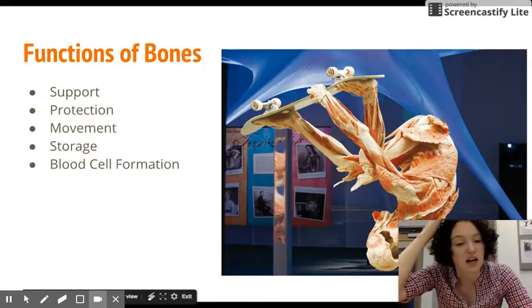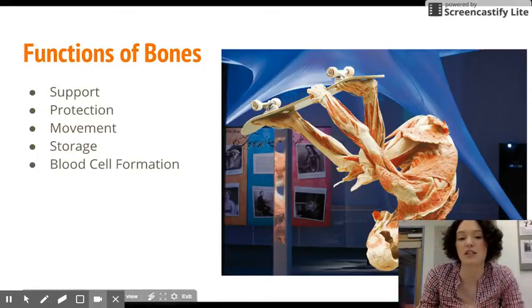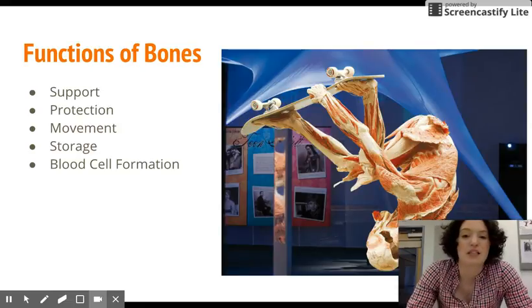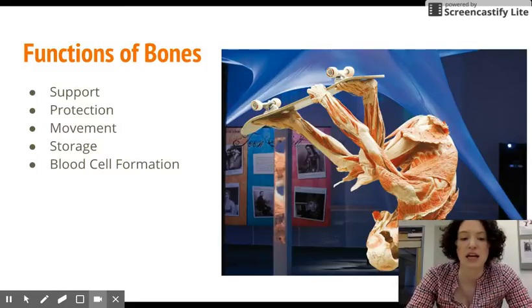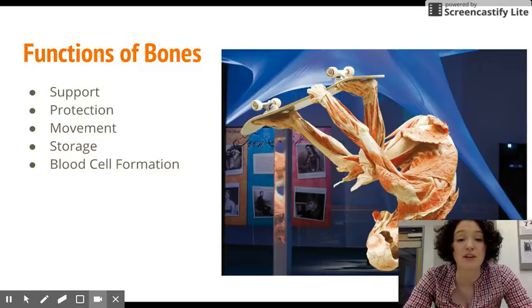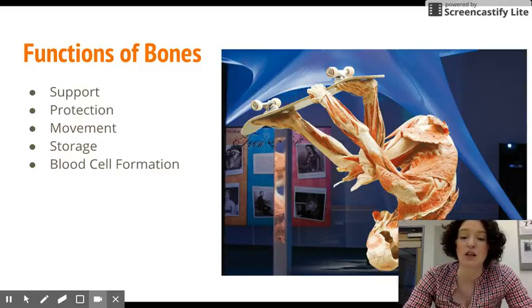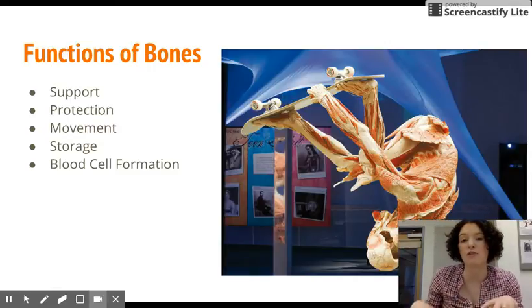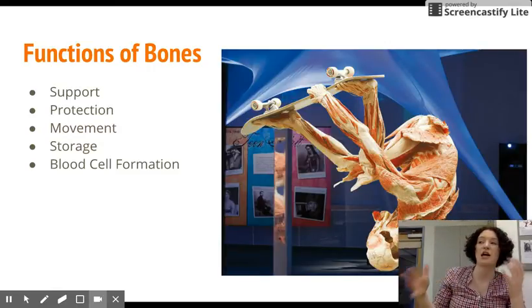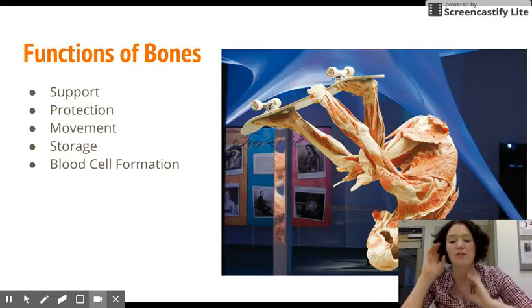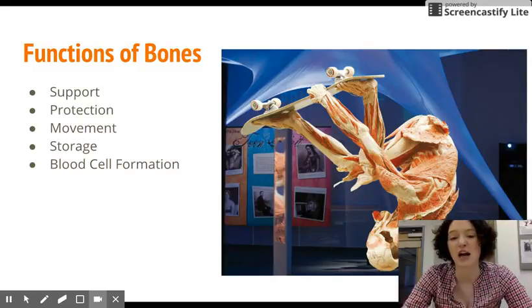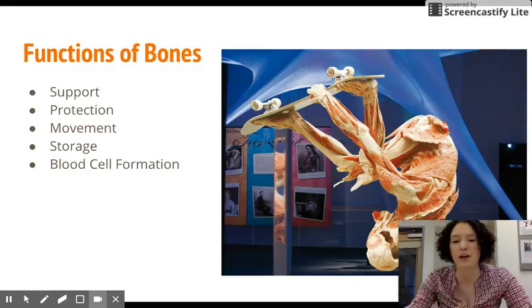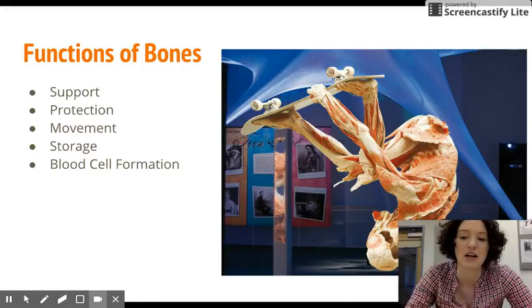Protection is our next function. Bones obviously protect soft body organs. For example, the skull protects the brain and the rib cage protects your heart and your lungs. Movement is another really big function. Skeletal muscles, which are the bulk of our muscular system that allows us to move around our world, attach to our bones and allow us to move our limbs.